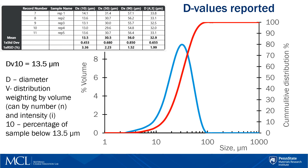For volume-weighted particle size distributions, which are reported by laser diffraction, it is convenient to report parameters based upon the maximum particle size for a given percentage volume. These percentages are reported as D values. For example, DV10 is equal to 13.5 microns. Here, D is diameter, V is distribution weighting by volume, and 10 is the percentage of the sample below 13.5 microns. So it means that 10% by volume of your particles is less than 13.5 micrometers.